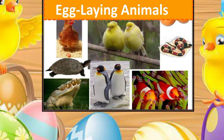Let's understand about egg-laying animals. Many animals reproduce by laying eggs. The eggs are either kept in a warm place or the parent animal sits on them to keep the eggs warm. Once the eggs mature, the young ones hatch out. Animals that lay eggs include birds, frog, fish, turtle, lizard, crocodile, snake, cockroach, butterfly, bee, mosquito, and grasshopper. Birds are warm-blooded animals and they also lay eggs.